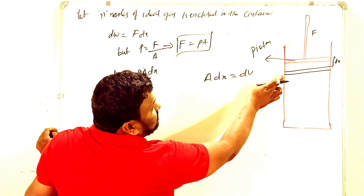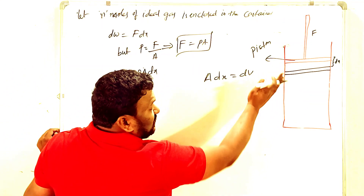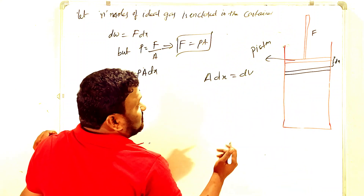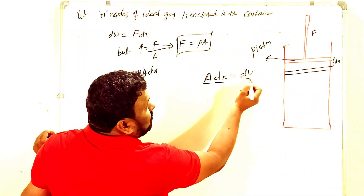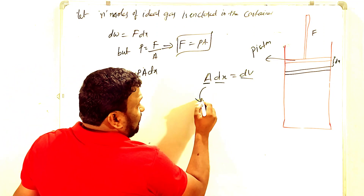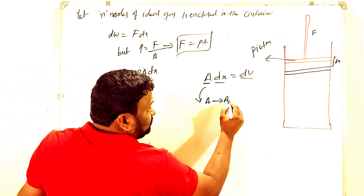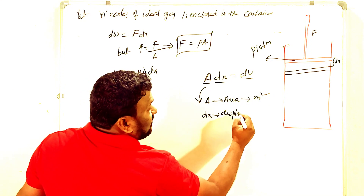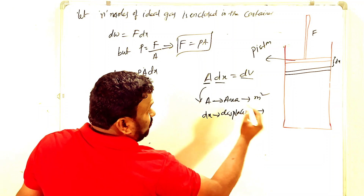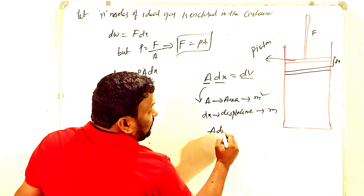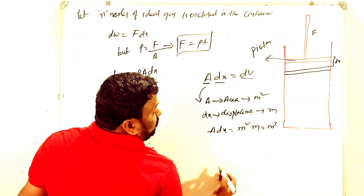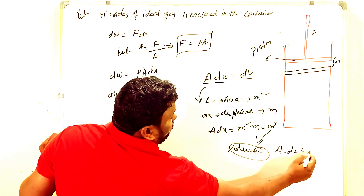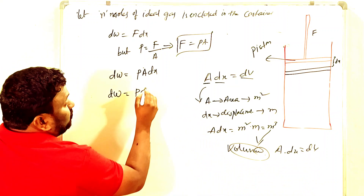A · dx is nothing but the change in volume dV. This is because area A has units of m² and displacement dx has units of m, so A · dx gives m³ — which is the unit of volume. Therefore dW = P dV. This is the small amount of work done by the gas for a small displacement dx.